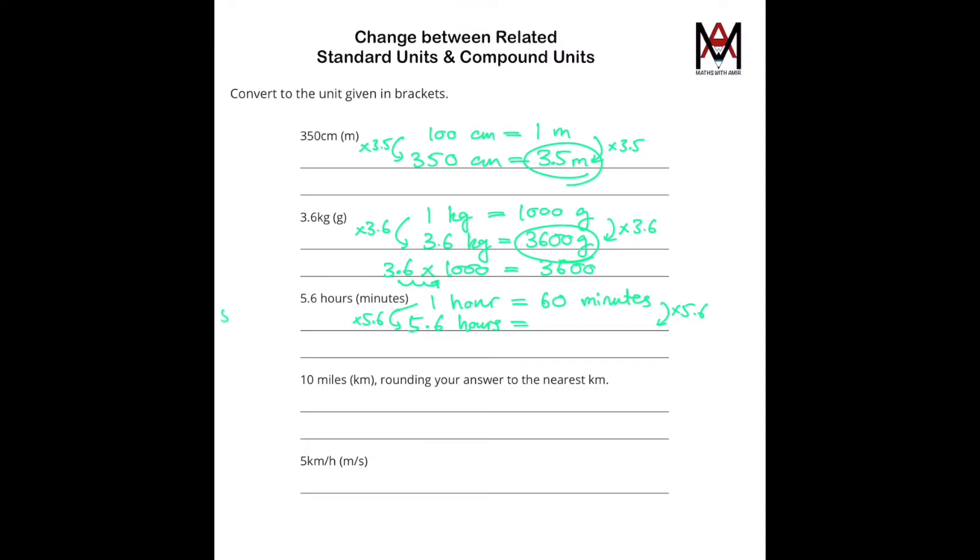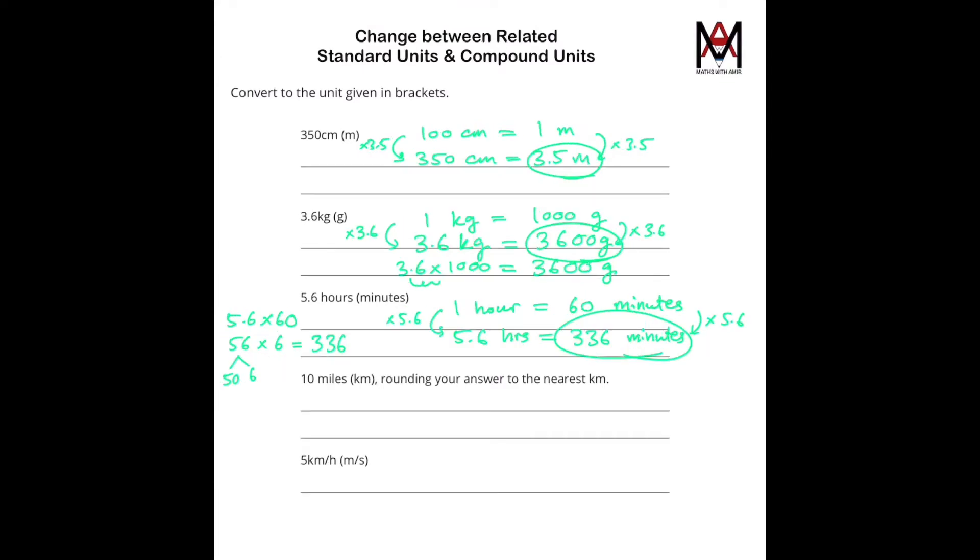So 5.6 times 60 is the same as 56 times by 6. That's 336, as 50 times 6 is 300, and 6 times 6 is 36. So it's basically 300 plus 36. So this is the answer.